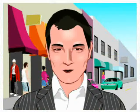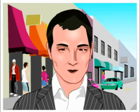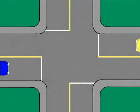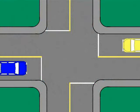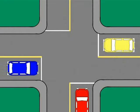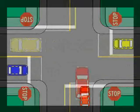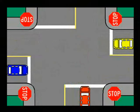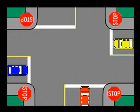Scenario one of one. At an intersection where stop signs are located on all four corners, the first vehicle to come to a full stop should be allowed to proceed first. When two vehicles arrive at such an intersection at the same time, the vehicle on the right hand side has the right of way and should proceed through the intersection first.